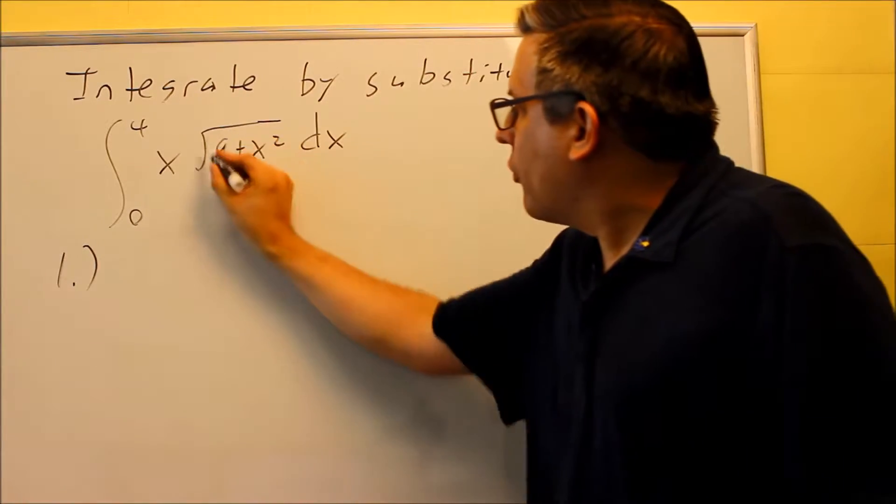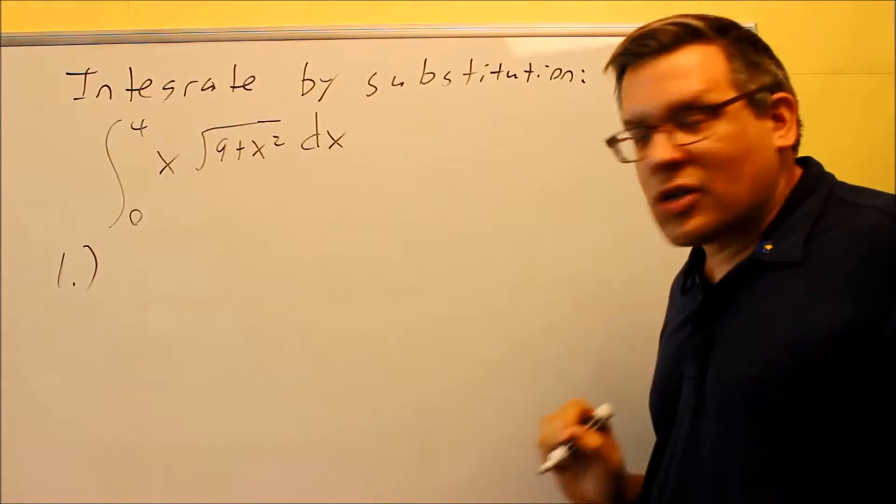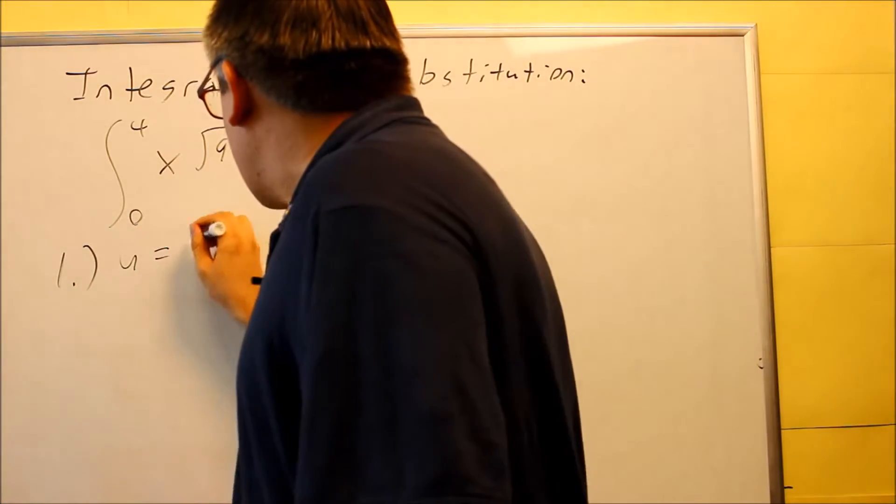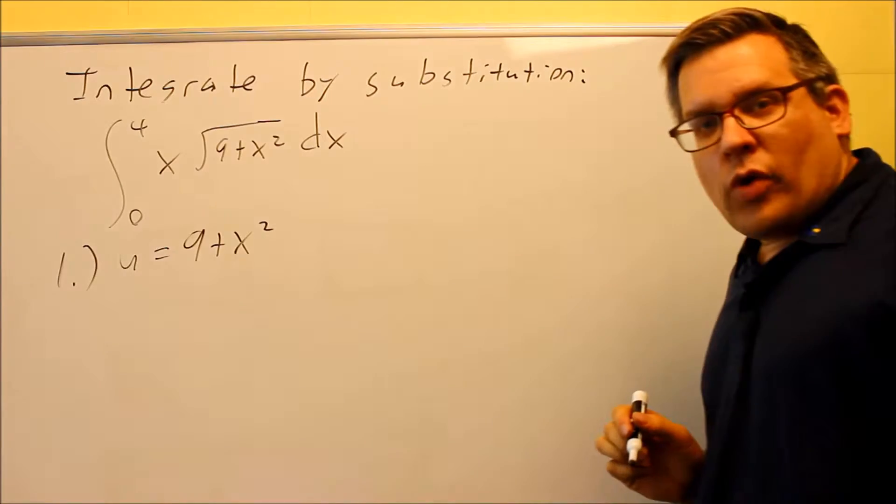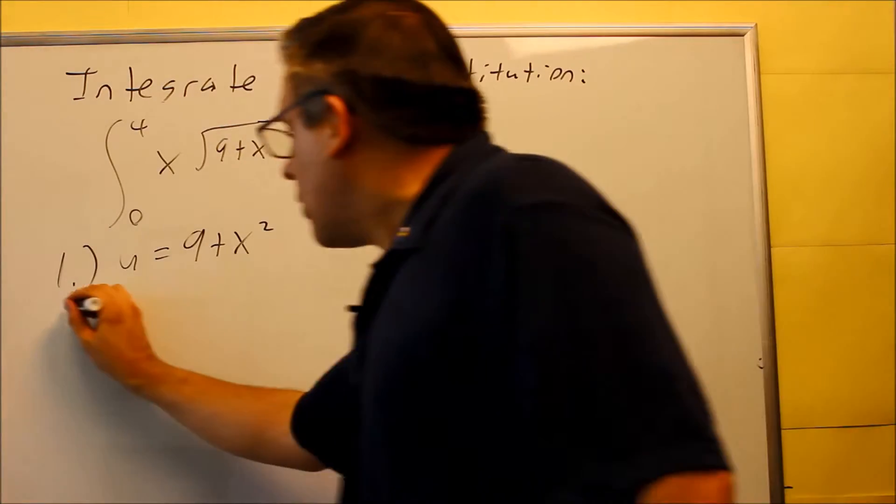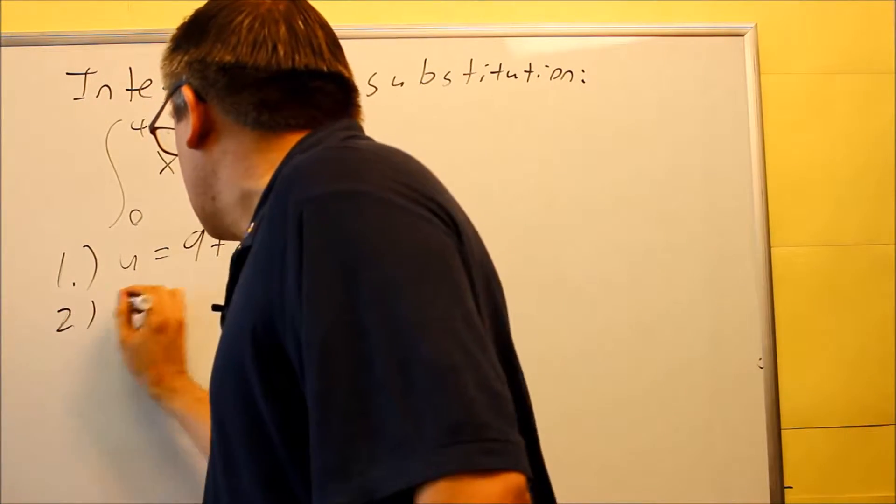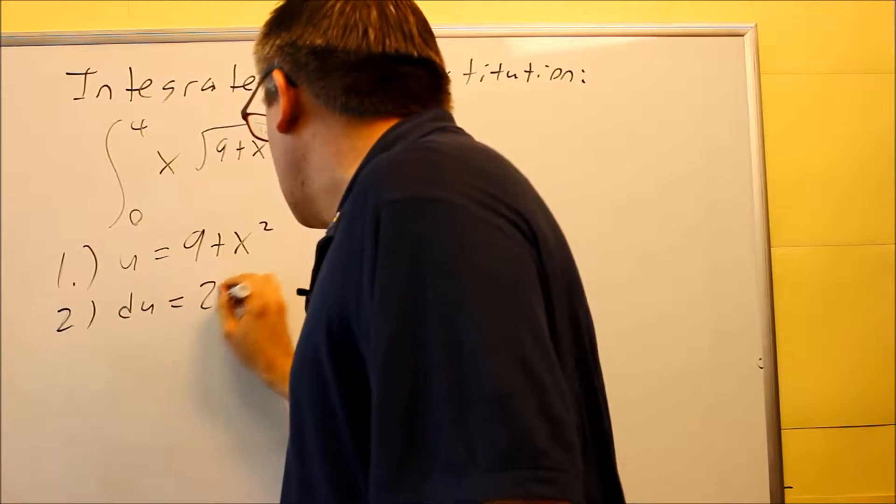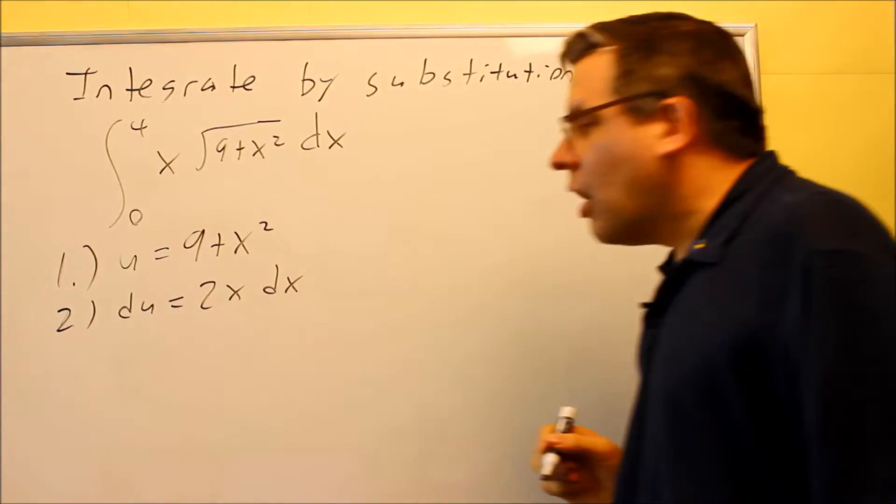The first thing you look for, you look for the u. The u is the one that's usually inside of something else, so in this case the u is 9 plus x squared. You're going to take the derivative of both sides for step number two, so we're going to do du equals 2x dx.